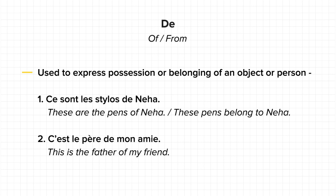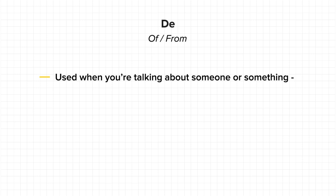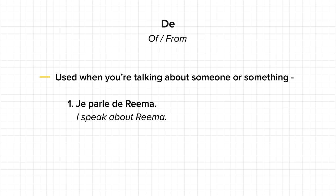Another example where 'de' is used as 'of' is when you are talking about someone or something. For example, 'Je parle de Rima' — 'I speak about Rima'. See, it's that easy, isn't it?